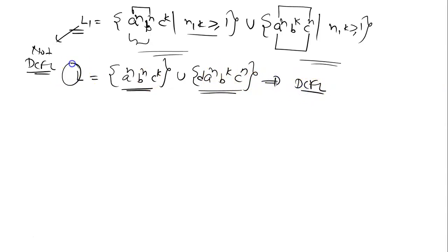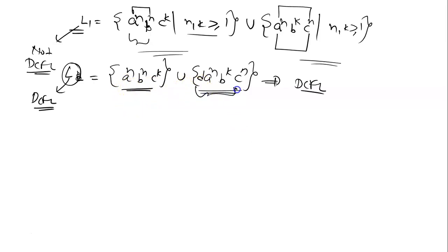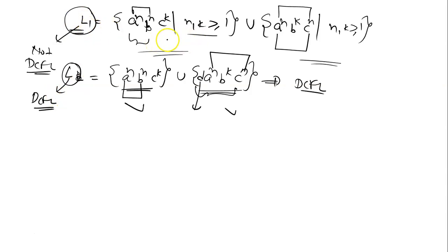This language L is a DCFL, because now everything is clear — the push and pop operations are unambiguous. First push all the a's. If the string starts with 'd', check a^n b^k c^n; if it does not start with 'd', check a^n b^n c^k. The 'd' tells you which part the string belongs to, so L is DCFL.